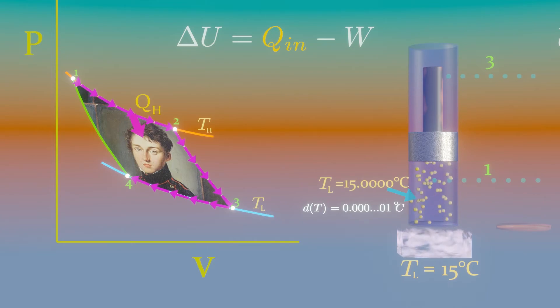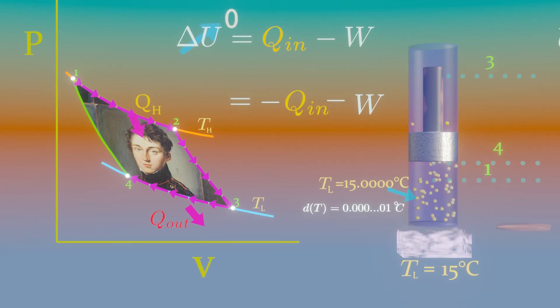It continues until the piston reaches state 4. The amount of heat rejected from the gas during this process is QL. Again you can verify this compression process using first law. Heat transfer out from the system to sink is a negative quantity. Temperature TL is constant, so zero energy change. And the work done will be negative, which means compression.